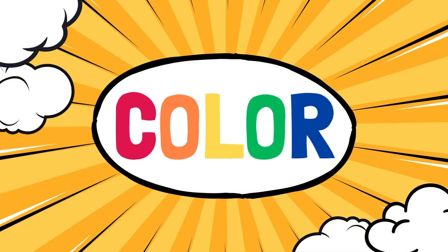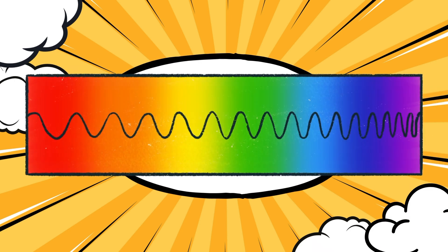Did you know that colors are just different wavelengths of light? When light hits an object, some of it gets absorbed and the rest gets reflected. The colors that we see are the colors that get reflected back to our eyes.